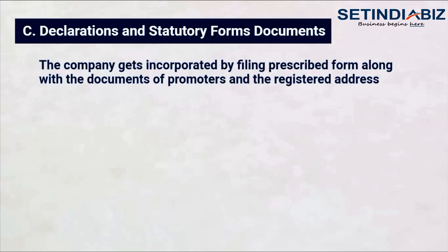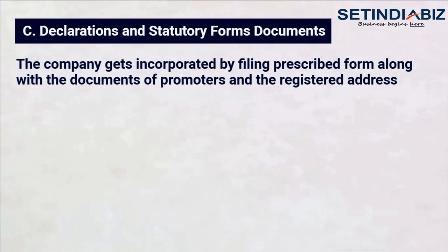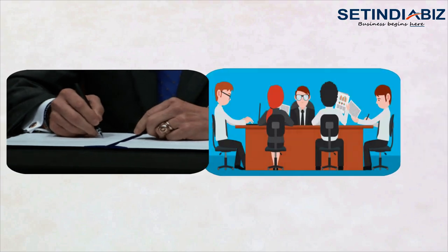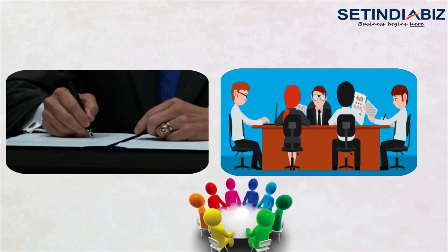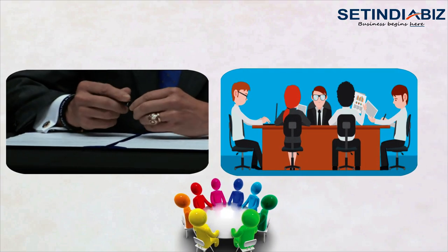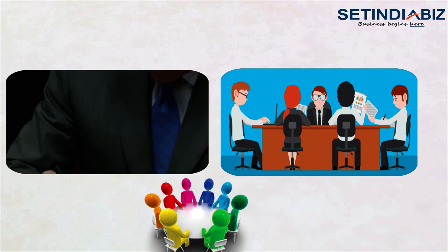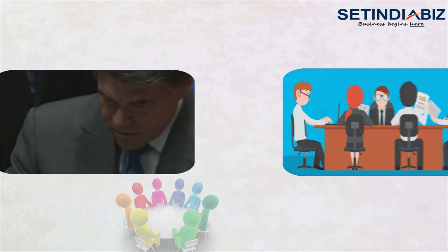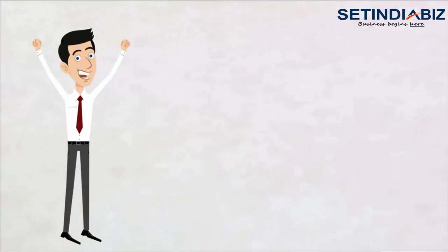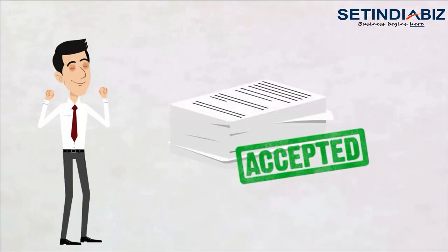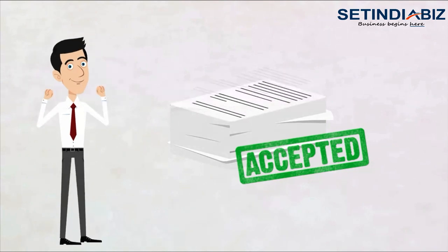C. Declarations and statutory forms documents. The company gets incorporated by filing a prescribed form along with the documents of promoters and the registered address. As per law, the directors and shareholders have to sign many declarations which are also filed for consideration of the Registrar of Companies. Once the filed application is accepted by the ROC, the certificate of incorporation is issued.